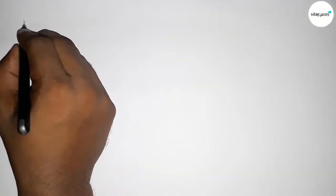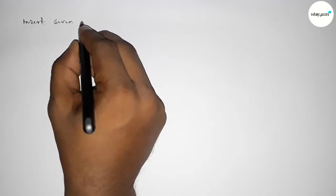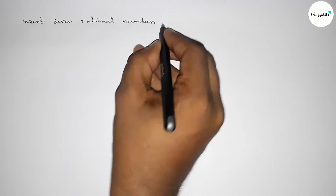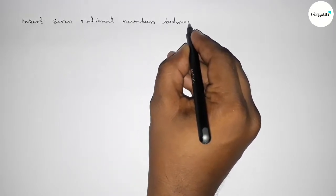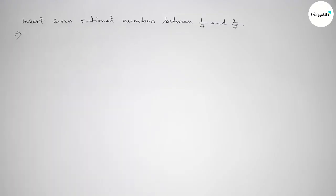Hi everyone, welcome to essay share classes. Today in this video we have to find 7 rational numbers between 1/7 and 2/7 in easy way. So let's start the video and solve this problem.